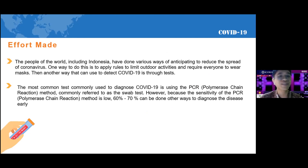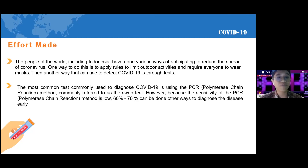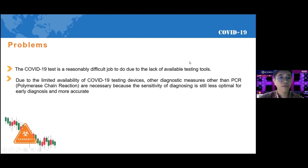People of the world, including Indonesia, have done various ways to anticipate and reduce the spread of coronavirus. One way is to apply rules to limit outdoor activities and require everyone to wear masks. Another way that can be used to detect COVID-19 is the PCR or swab test. However, because the sensitivity of the PCR method is low — only 60 to 70 percent — other ways to diagnose the disease early are needed.